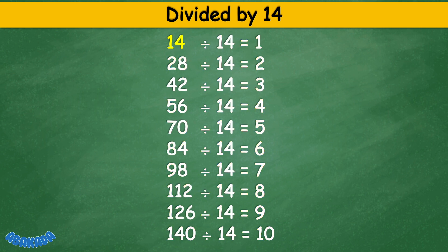Divided by 14: 14 divided by 14 equals 1, 28 divided by 14 equals 2, 42 divided by 14 equals 3, 56 divided by 14 equals 4, 70 divided by 14 equals 5, 84 divided by 14 equals 6, 98 divided by 14 equals 7, 112 divided by 14 equals 8, 126 divided by 14 equals 9, 140 divided by 14 equals 10.